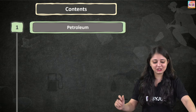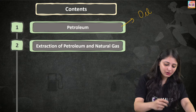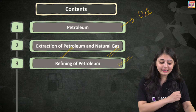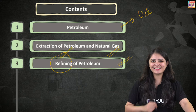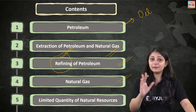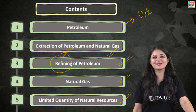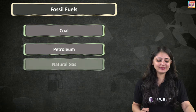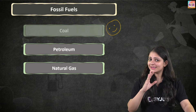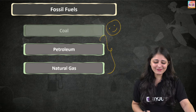Coming back to our session — today we'll talk about petroleum. Petroleum is also known as oil. We will discuss how petroleum is extracted, how natural gas is extracted, and refining of petroleum — that's a new term we will cover in great detail. We will also be talking about natural gas, and since all these fossil fuels are present in limited quantities, we need to think about that as well. We have already covered coal in the last class, so similarly we will be covering petroleum and natural gas today.